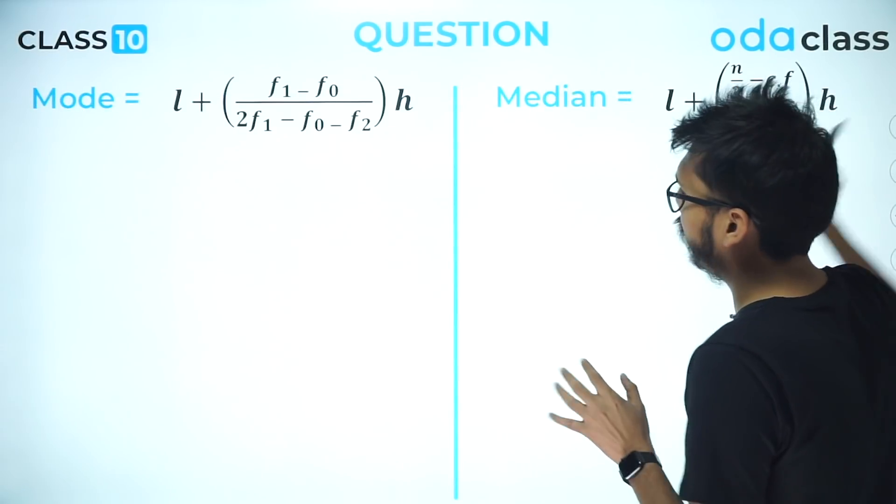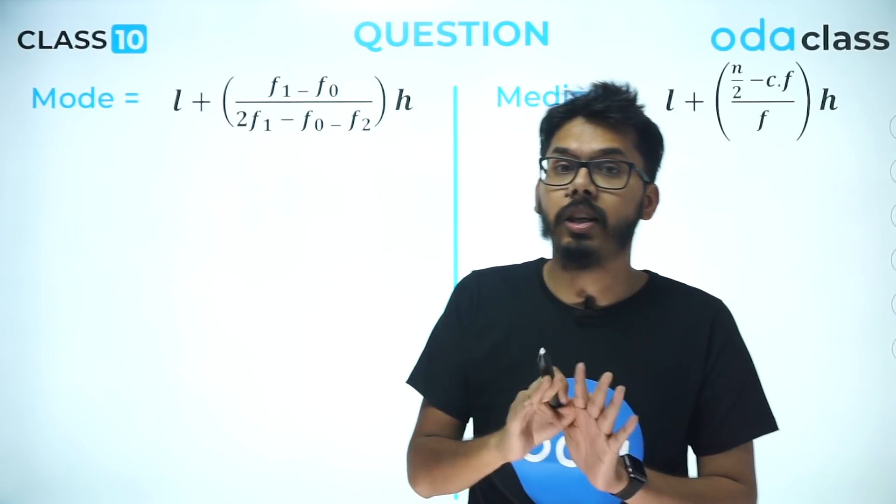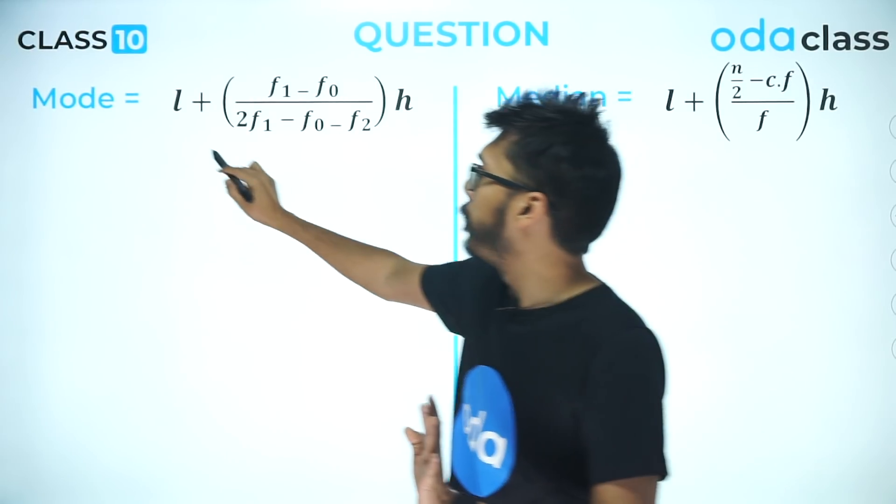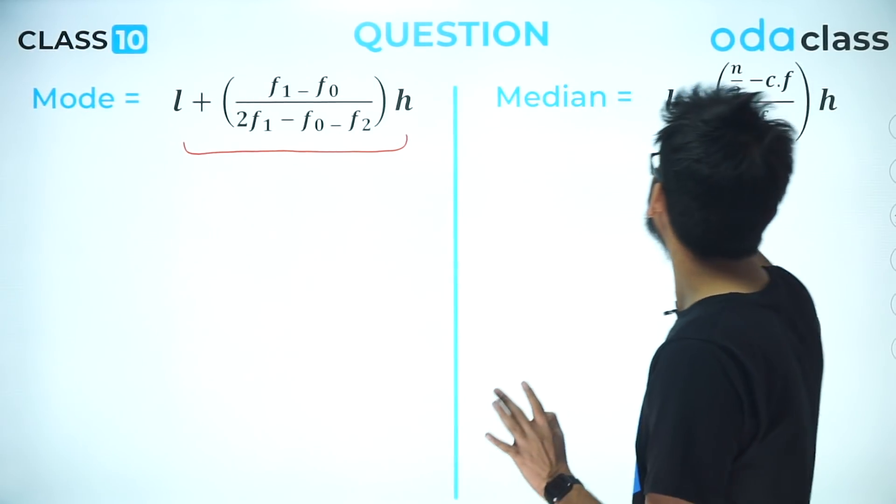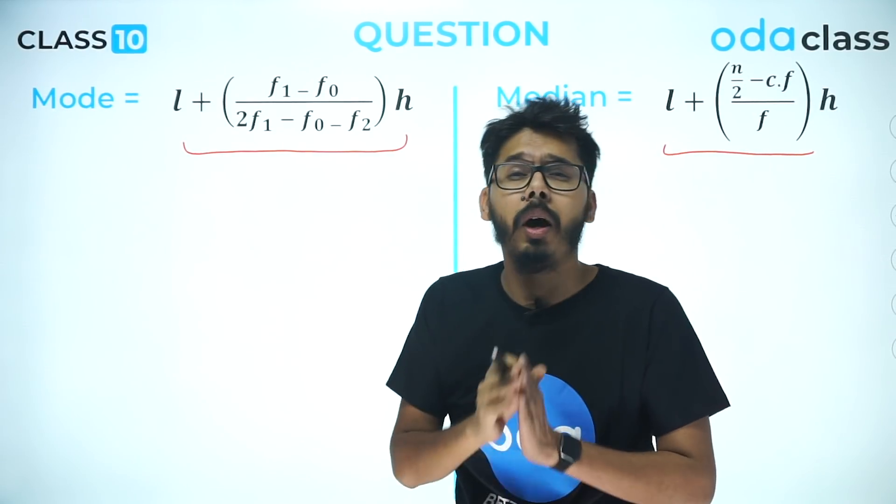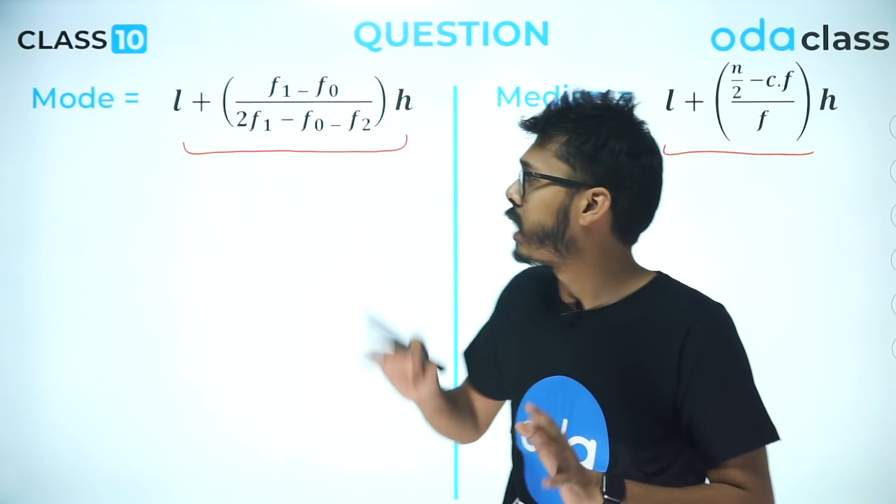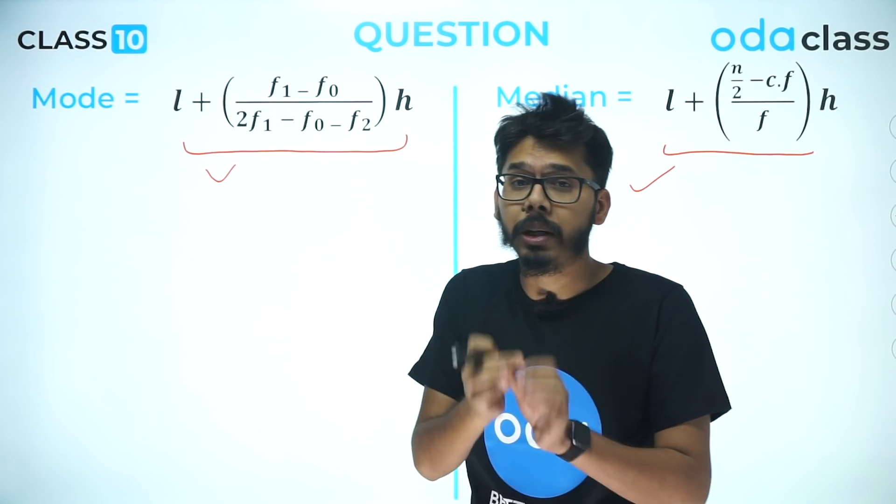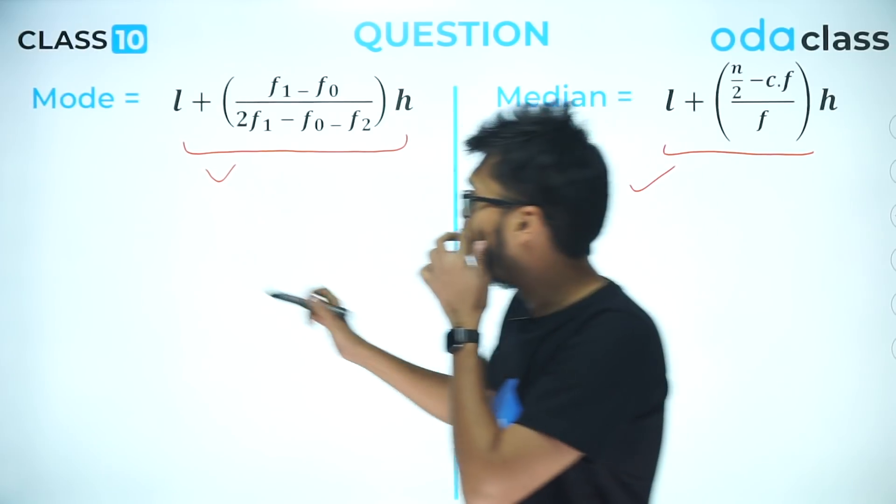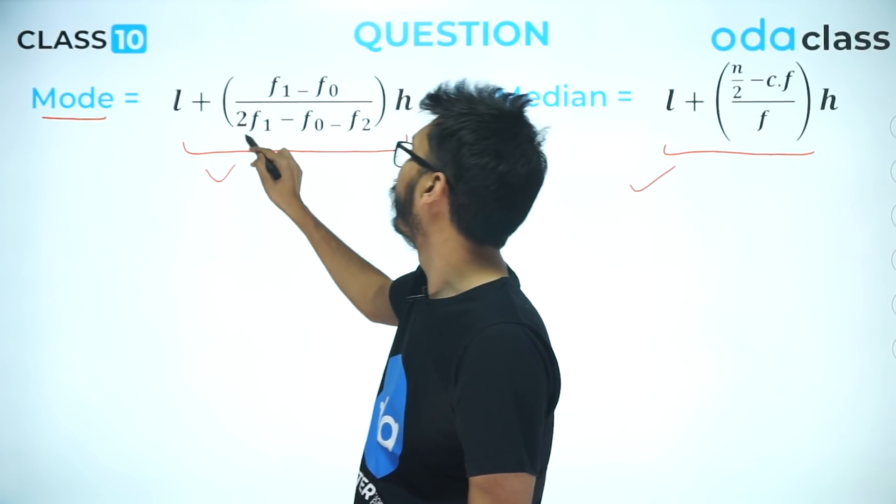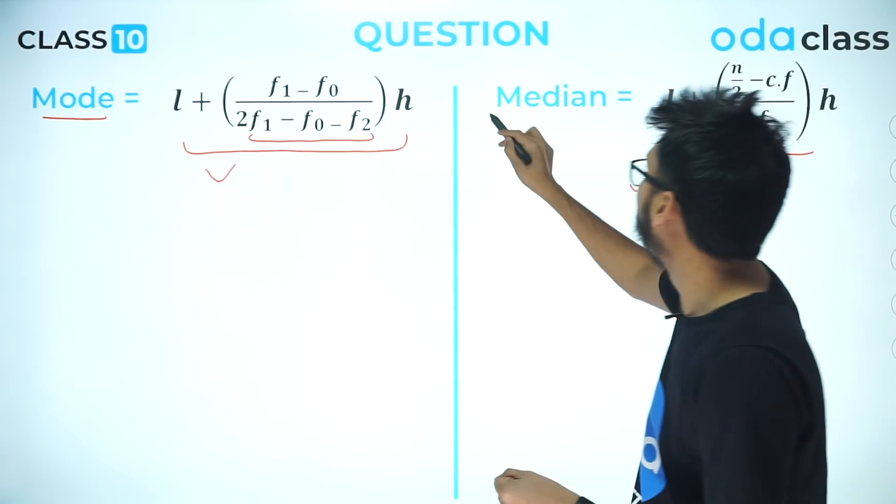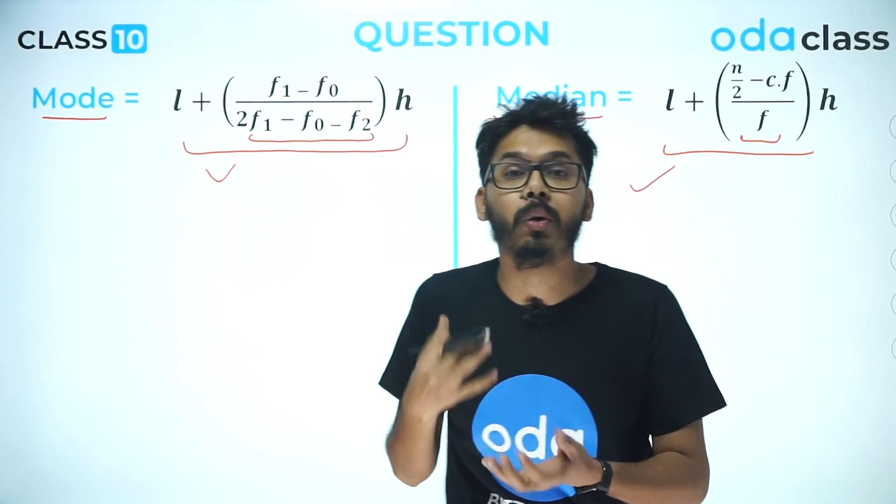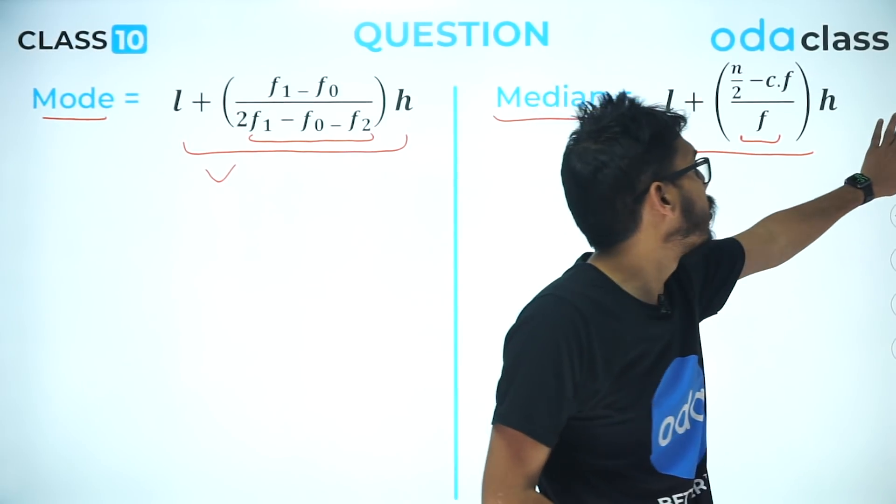The next point is again related to statistics, and this is one of the common mistakes which students tend to make. The common mistake is they misinterpret the mode formula with the median formula. You all have memorized this formula again and again, but when it is coming in the final exam, somehow you will mix up the mode formula with median or median with mode. So guys, I'm going to help you remember this: for mode, this size is less—this is how I remember—so the denominator here is more. And for median, the size or number of alphabets is more, so the denominator is less. That's how you can help yourself remember this formula.